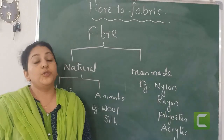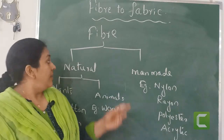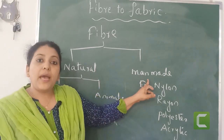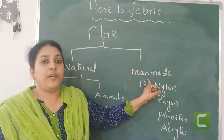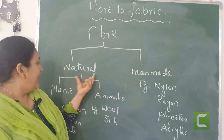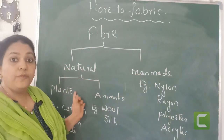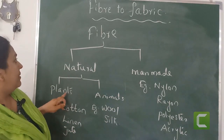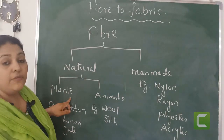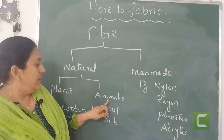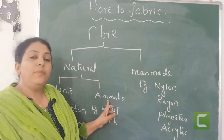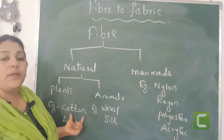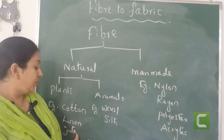Fibers are of two different types. One is natural fiber and the other one is man-made or artificial or synthetic fibers. Natural fibers are again of two different types — the fibers that are originated from plants and also from animals. The fibers that are originated from plants, examples are cotton, linen, jute, etc.